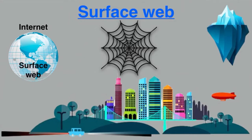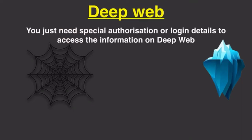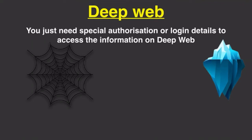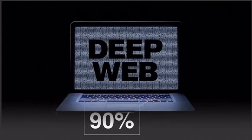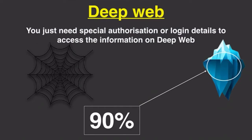Let's talk about the second layer: deep web. This is the secret web — it's not visible to a normal user. You need special authorization or login details to access information on the deep web, because some private data needs to be protected. It is a misleading belief that accessing the deep web requires a special skill — it's not rocket science. In fact, it's legal to use the deep web. The deep web comprises 90% of the internet and includes data which is not indexed by search engines.